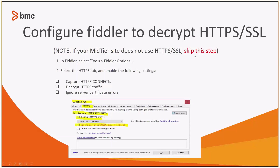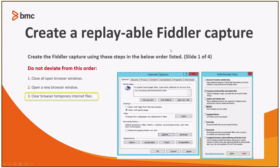If your mid-tier is running HTTP, then you can just skip this step. Then on your PC, what you'll need to do is close all your open browser windows, open a new browser, and make sure to clear your temporary internet files. You'll go into Internet Options, click Delete — this screen will come up. You'll make sure that your internet files is selected and click Delete. Once the browser history files have been deleted, you'll notice a confirmation at the bottom of your screen and you're ready for your next step.